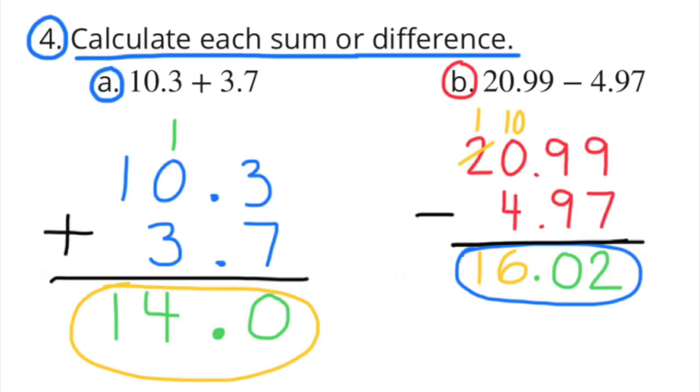Number 4: Calculate each sum or difference. Part a: 10 and 3 tenths plus 3 and 7 tenths. That equals 14. Part b: 20 and 99 hundredths minus 4 and 97 hundredths. That equals 16 and 2 hundredths.